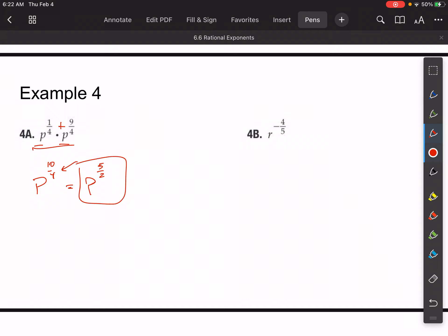You're just adding there. For 4b, this, so careful here, you guys. This is the same thing as one over r to the four-fifths, right?